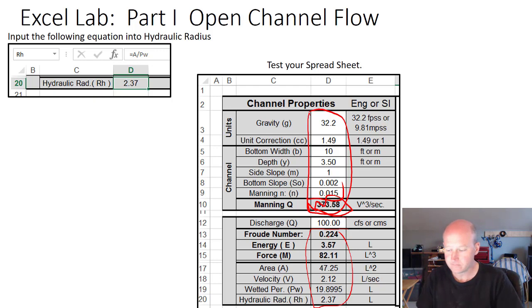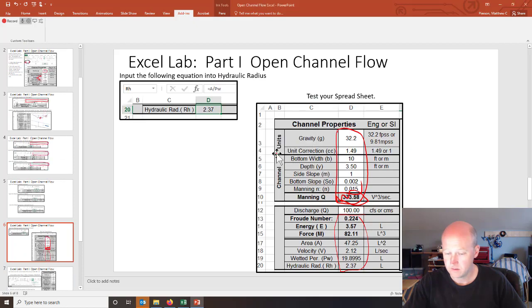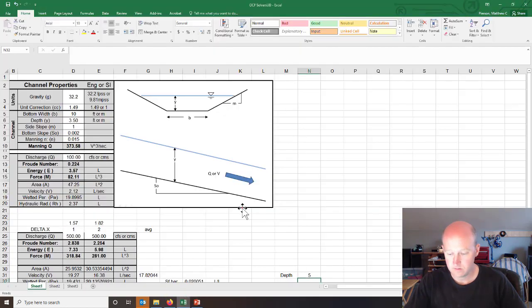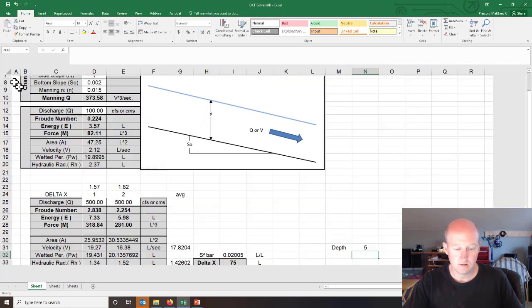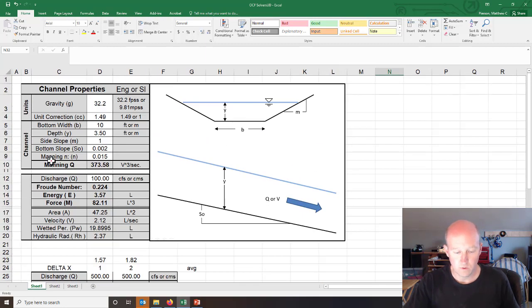So now let's do a test. We're going to get the spreadsheet open, and what we want to do is we want to change the depth so that we get the flow rate to be 100. So that is going to tell us what the depth would be if the flow rate was 100.